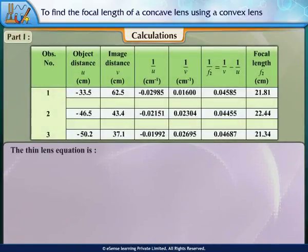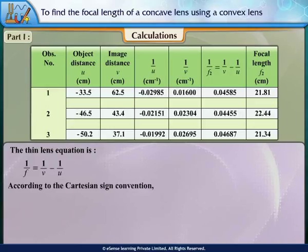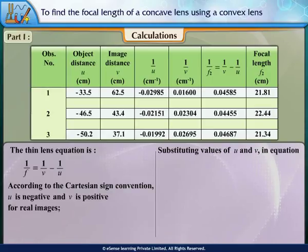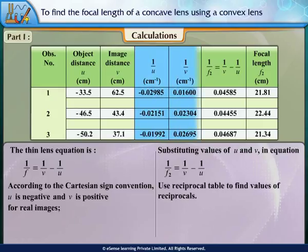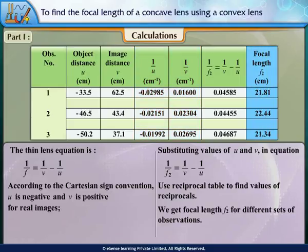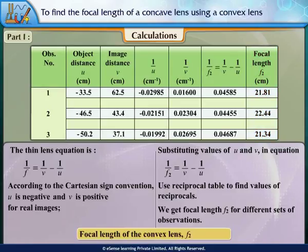Calculations: The thin lens equation is 1/F = 1/V − 1/U. According to the Cartesian sign convention, U is negative and V is positive for real images. Substituting values of U and V: 1/F2 = 1/V − 1/U. Use a reciprocal table to find values of reciprocals. We get the focal length F2 for different sets of observations. Hence, the mean focal length of the convex lens F2 = 21.9 cm.